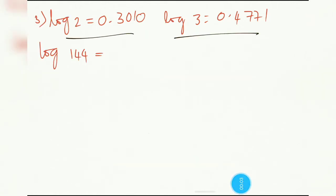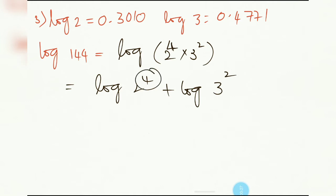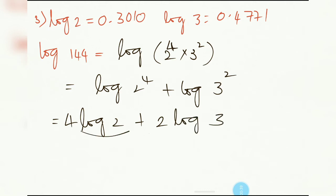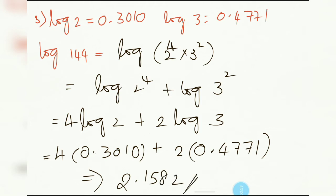Third question: log 2 value and log 3 value are given, and we have to find log 144. Just do the prime factorization: 144 = 2^4 × 3^2. So log 144 = log 2^4 + log 3^2 = 4 log 2 + 2 log 3. Substituting the values: 4 × 0.3010 + 2 × 0.4771, which equals 2.1582.